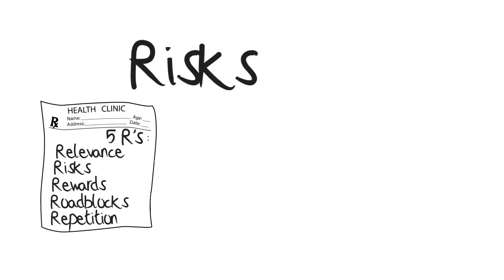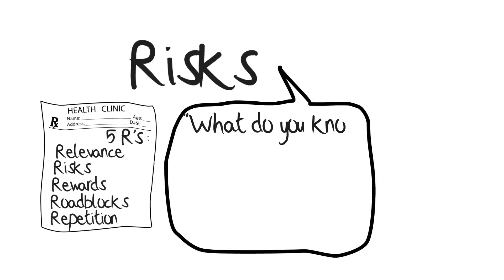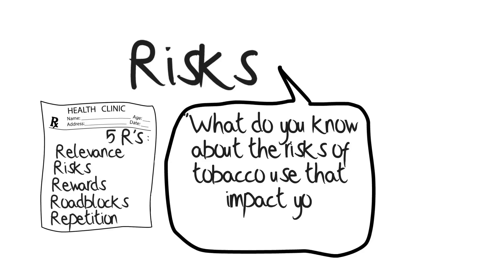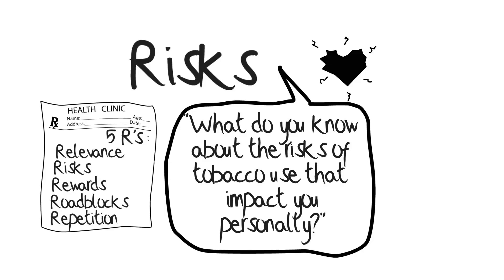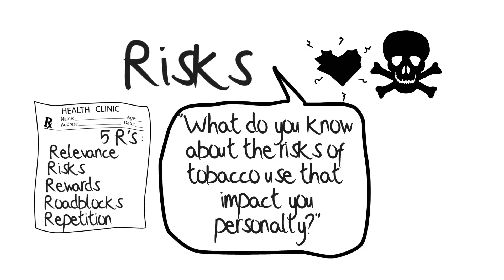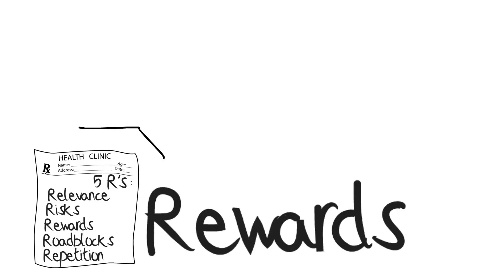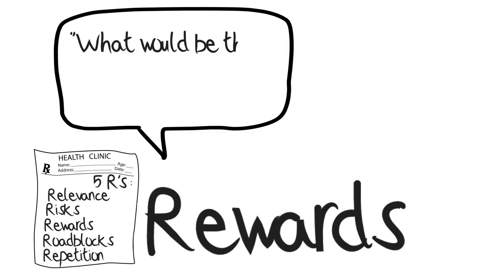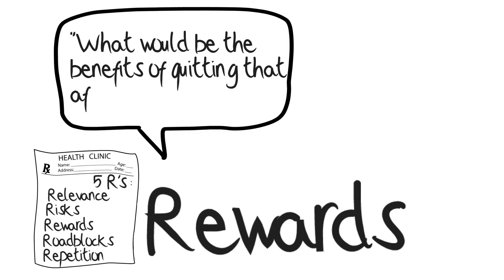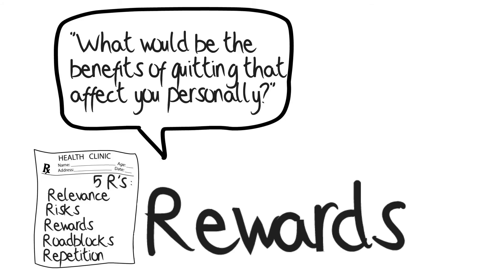The second R: Risk. Ask, 'What do you know about the risks of tobacco use that impact you personally?' If the patient does not know, provide information on the harms of tobacco use, as covered in previous modules. The third R: Rewards. Ask, 'What would be the benefits of quitting that affect you personally?' If the patient does not know, provide information on the benefits of quitting, as covered in the previous modules.